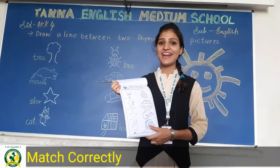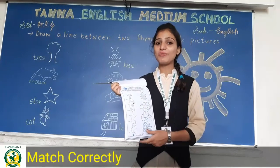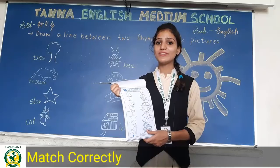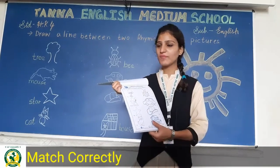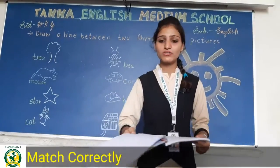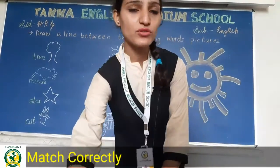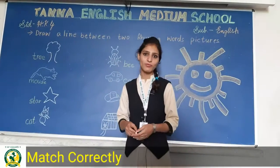Cat, bat, mat, rat — same sound कर रहा है ना? House, mouse — very good. तो वैसे हमें rhyming words को match करना है.